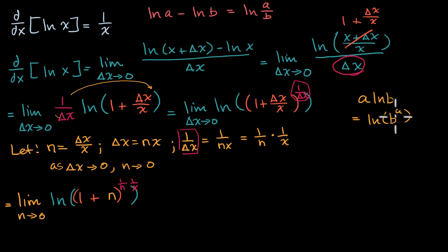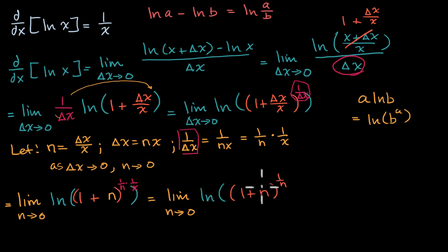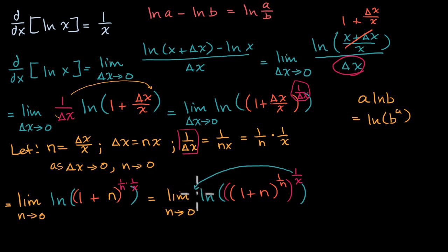Now we can use this same exponent property. This is going to be the same thing as the limit as n approaches zero of the natural log of one plus n to the one over n. If you raise something to an exponent and that's times something else, that's the same as raising it to the first exponent and then raising it to the second value — straight out of our exponent properties. Now we can use this property the other way to bring the one over x out front, and since one over x is not affected as n approaches zero, we can take it completely out of the limit.